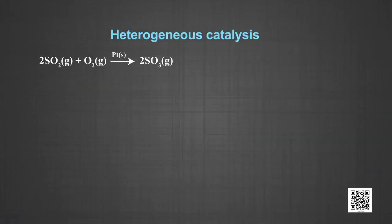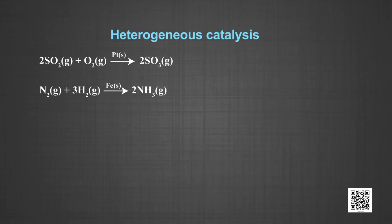Coming to heterogeneous catalysis: the catalytic process in which the reactants and the catalyst are in different phases is known as heterogeneous catalysis. Number one: oxidation of sulphur dioxide to sulphur trioxide in the presence of platinum — the reactants are in the gaseous state while the catalyst is in the solid state. Number two: combination between dinitrogen and dihydrogen to form ammonia in the presence of finely divided iron in Haber's process — the reactants are in the gaseous state while the catalyst is in the solid state.